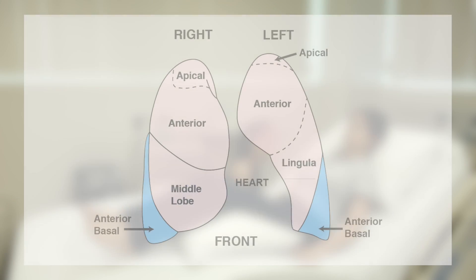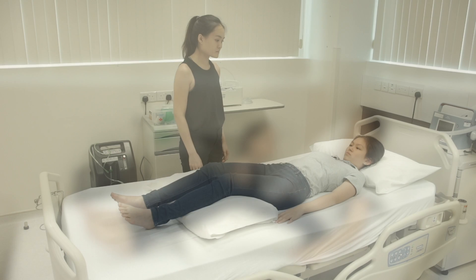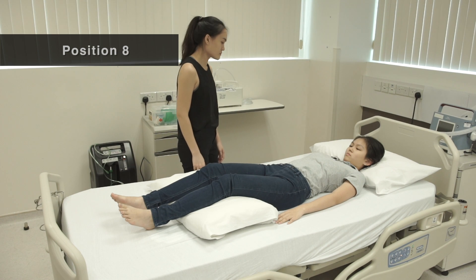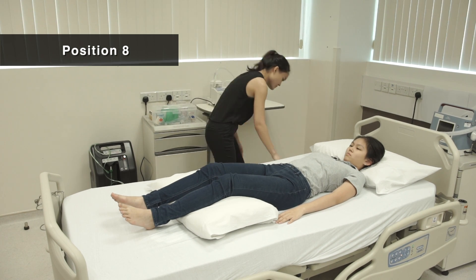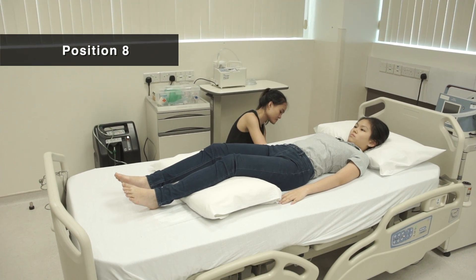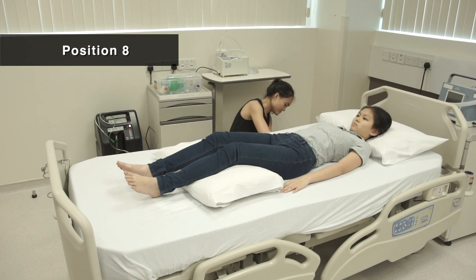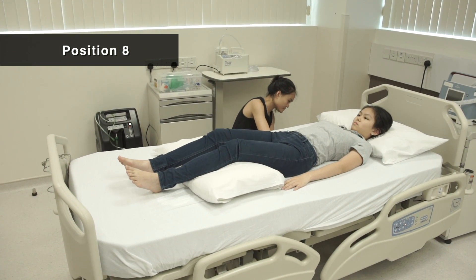Position 8 is for secretion at the front lower portion of both lungs. Lie facing up with a pillow under the knees for comfort. Elevate the foot of the bed 20 degrees.